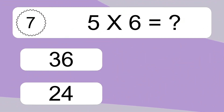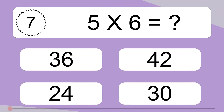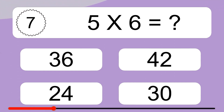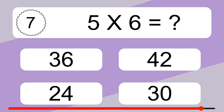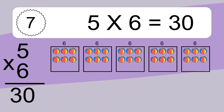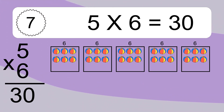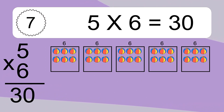5 times 6 equals what? 5 times 6 equals 30. We have 5 boxes, and each box has 6 colorful balls inside. If you count all the balls in all the boxes together, you will have 5 times 6 balls. This equals 30 balls.